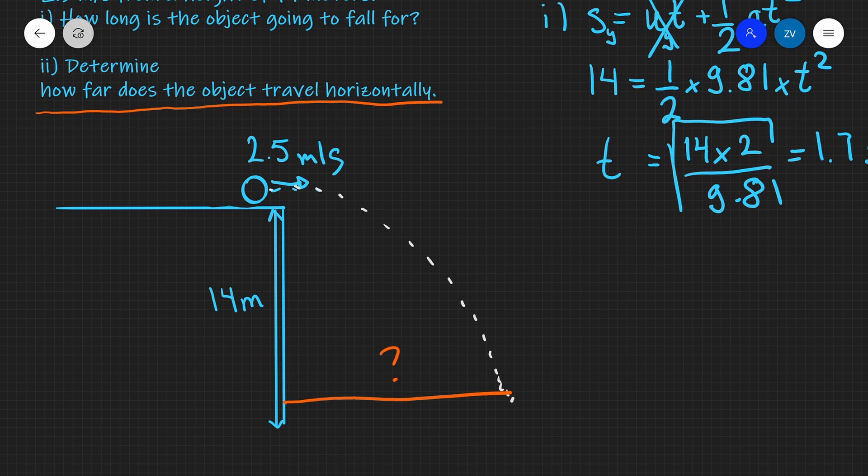Now it's important to know that there's no reason for this object to lose any of its horizontal velocity. The reason for that is that the only force acting on the object at any point of its flight is the weight which is just acting straight downwards.